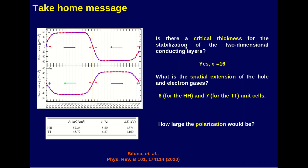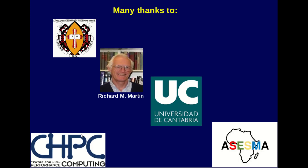The take-home message: we found a critical thickness of 16 unit cells to stabilize the two-dimensional conducting layers. The spatial extension of the hole and electron gases is 6 unit cells for the head-to-head and 7 unit cells for the tail-to-tail. The polarization values are 57.26 microcoulombs per square centimeter for the head-to-head and 45.72 microcoulombs per square centimeter for the tail-to-tail. Many thanks to the Catholic University of Eastern Africa, Richard Martin, the University of Cantabria for the scholarship, and the Center for High Performance Computing where the calculations were performed.